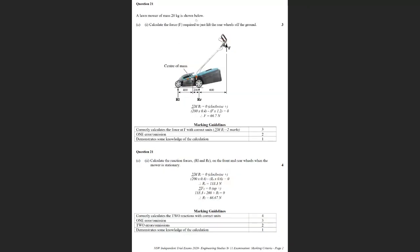A lawnmower of mass 20 kilograms. Calculate the force required to just lift the rear wheels off the ground. No one's going to tell you where it's going to pivot. You've got to know that if you're just on the verge of lifting the rear wheels off the ground, it's got to pivot about the front wheels. That's called engineering acumen. When you take moments about R1, the center of mass force is 200 newtons multiplied by 0.4 going clockwise. The force acting on the handles is at 1.2 meters. So you get a force of 66.7, and that was well answered.